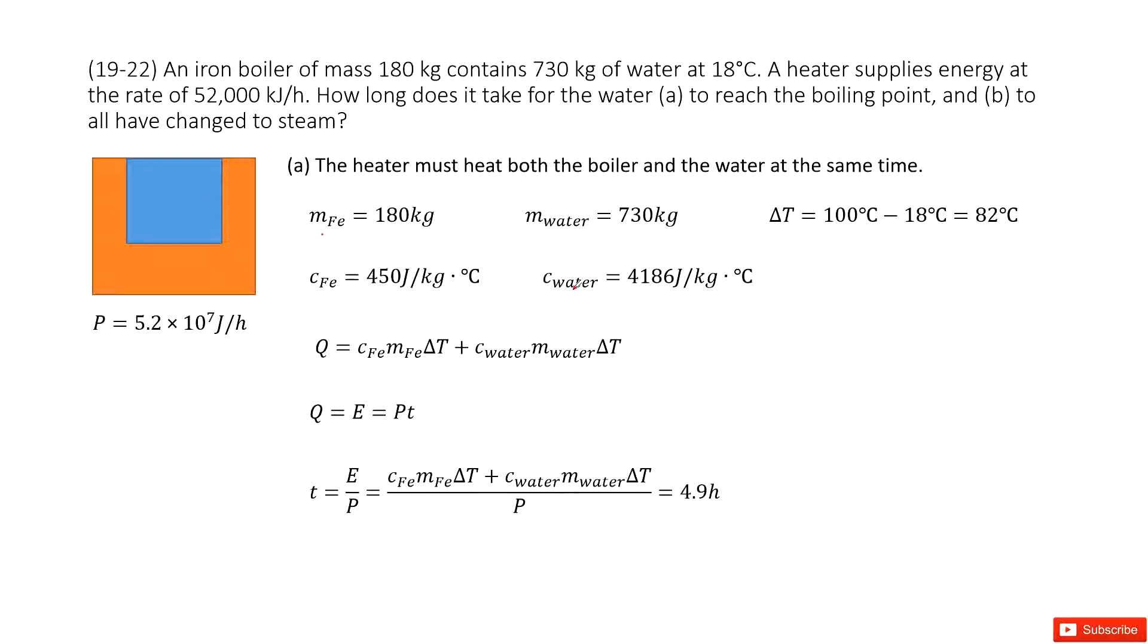Now we need to find how long it takes for water to reach the boiling point. How can we do that? We can consider the first law—energy is conserved. That means the electric energy is totally converted to heat, which the water and boiler absorb at the same time. The power of this boiler is given.